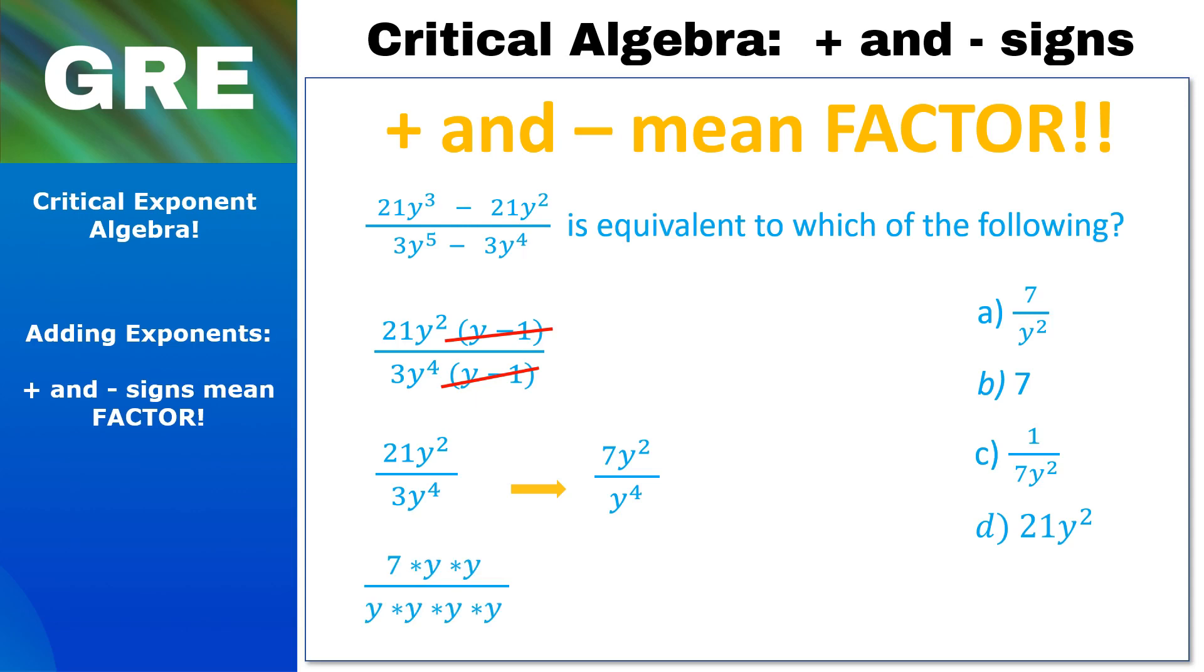Now if we break that all apart, it actually looks like this and it makes it very easy to see that we can cross off two y's on the top and the bottom. And what we're left with is 7 over y², and that's our answer, A. Very nicely done.